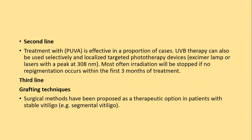The second-line treatment is phototherapy, including PUVA or UVB, which selectively target melanocytes. The excimer laser operates at 308 nanometers (the UVB wavelength) and is also quite effective. Therapy is started at minimum erythema dose and gradually built up, given two to three times a week for a prolonged period, taking three to six months for complete repigmentation.